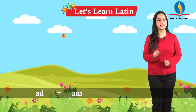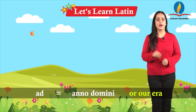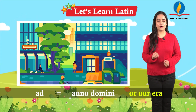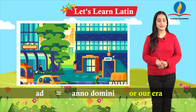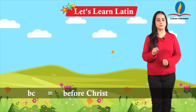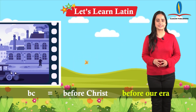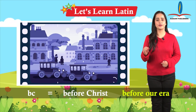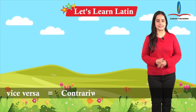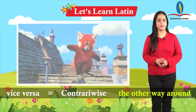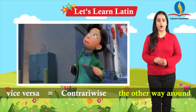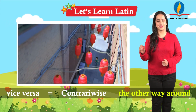A.D. is equal to anno domini, or our era. B.C. is equal to before Christ, before our era. V.C. is equal to vice versa, the other way around.